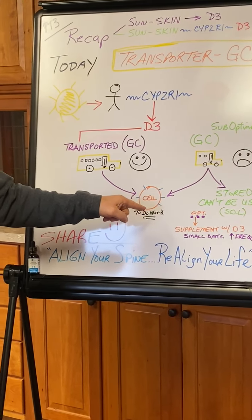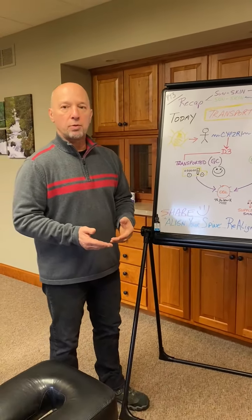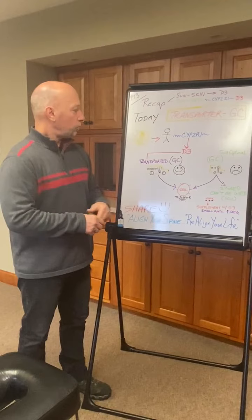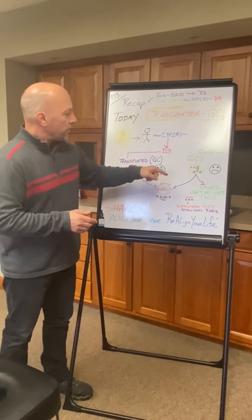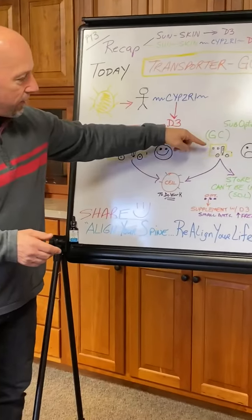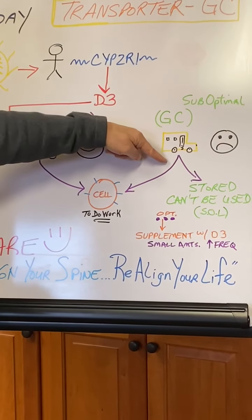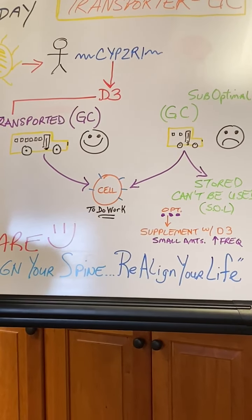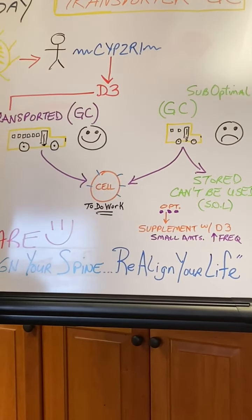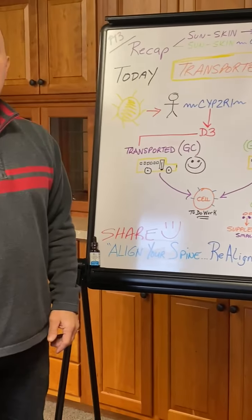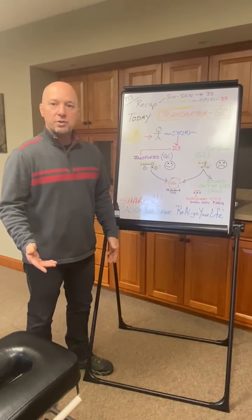We're not in the cell yet; we are just at the cell. We eventually have to get inside the cell in order for it to do work. But what happens if you have a suboptimal transport gene? Think of it as a smaller bus — only a little bit of the D3 can get on board and be transported to the cell. What happens to the rest? It gets stored and cannot be used.